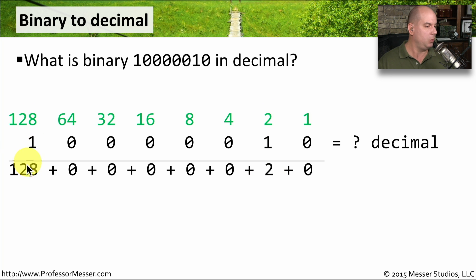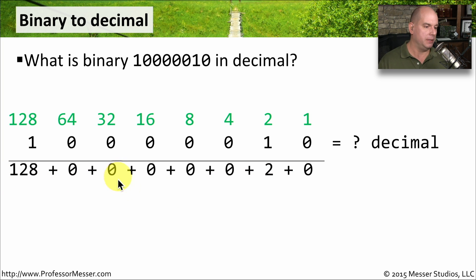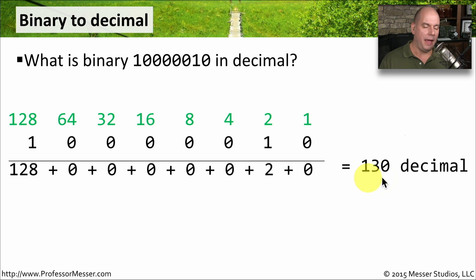We've got 128 and 2, so we bring down those two numbers, and all of the rest are zeros. We're now going to add all of those: 128 plus 0 plus 0 plus 0 plus 0 plus 0 plus 0 plus 2 plus 0, and we get 130. That is how easy it is to perform a decimal calculation when you have a binary number to begin with. With this conversion chart, you can grab any binary number and convert it to decimal very quickly.